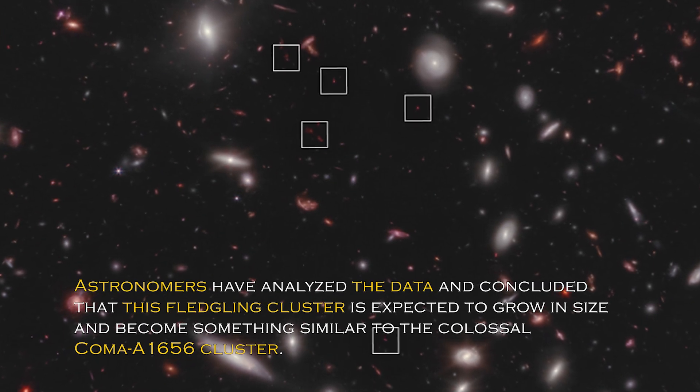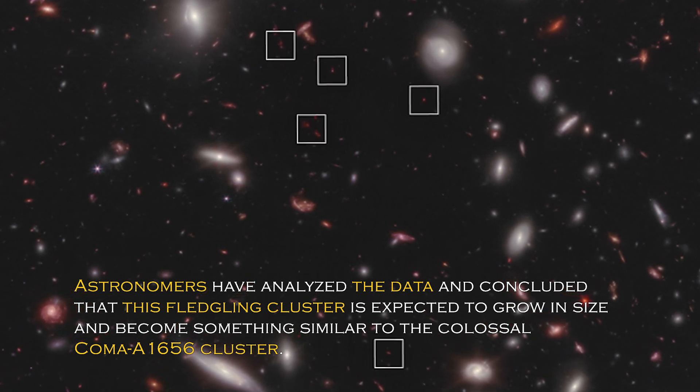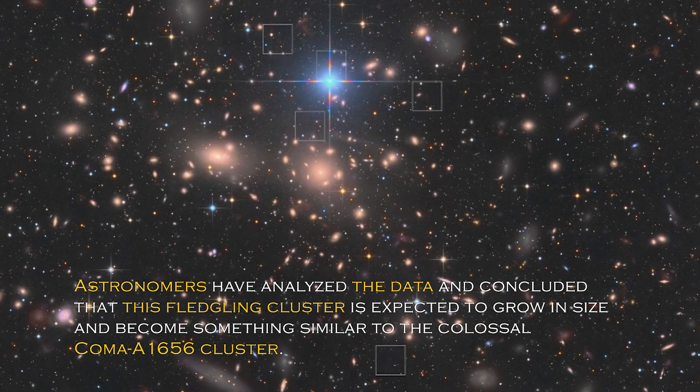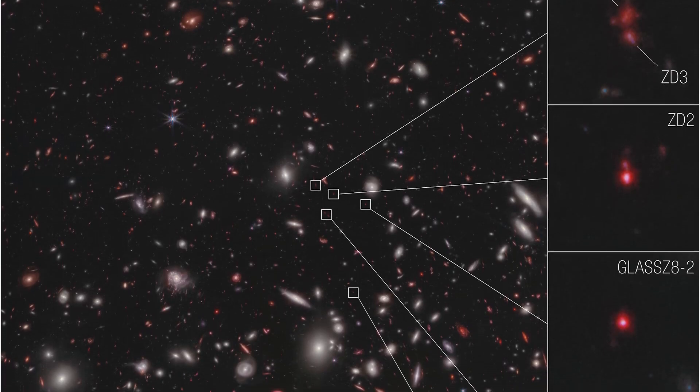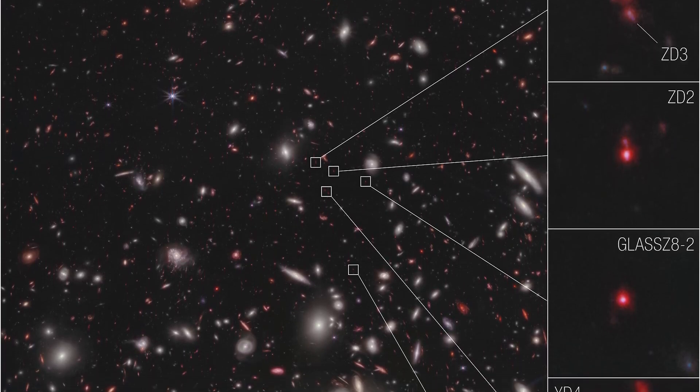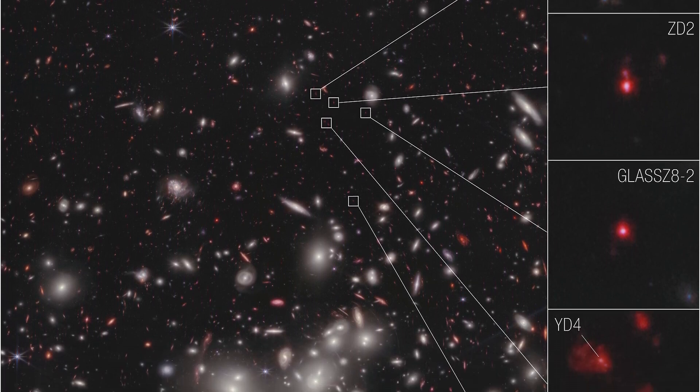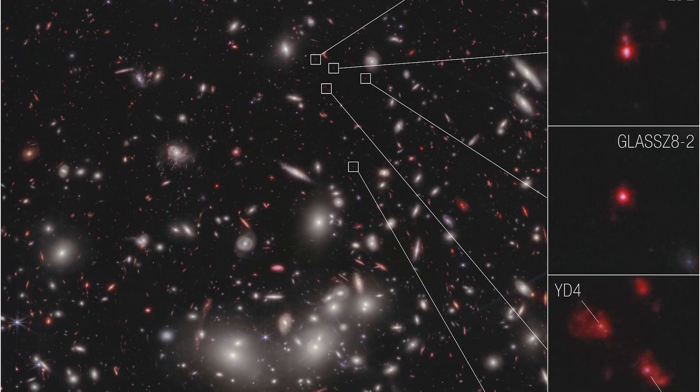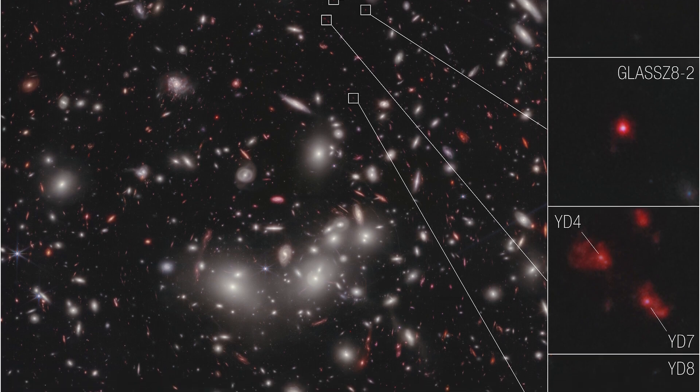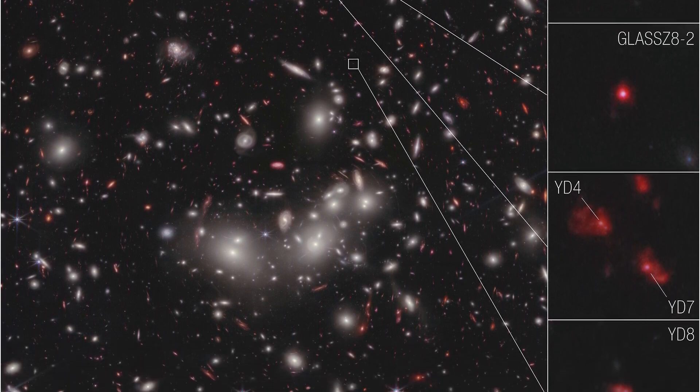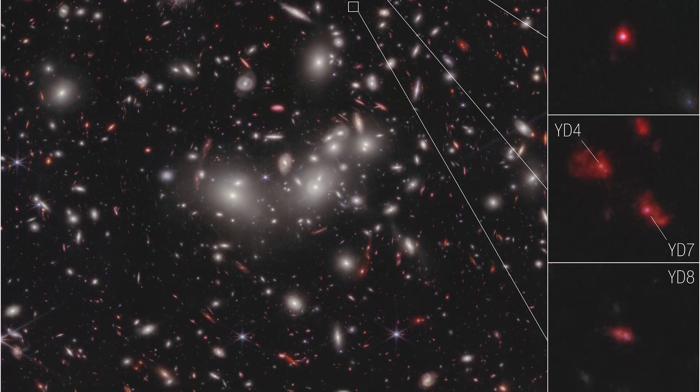Astronomers have analyzed the data and concluded that this fledgling cluster is expected to grow in size and become something similar to the colossal Coma A1656 cluster. The place where all this is taking place is unique and special, as it is in an area of accelerating galactic evolution. Thanks to the James Webb Space Telescope, researchers can now measure the velocities of these seven galaxies, which gives them the confidence to confirm that they are bounded together in a protocluster. NASA scientists compared these distant galaxies to small drops of water in different rivers that will eventually join together to form a large, powerful river.